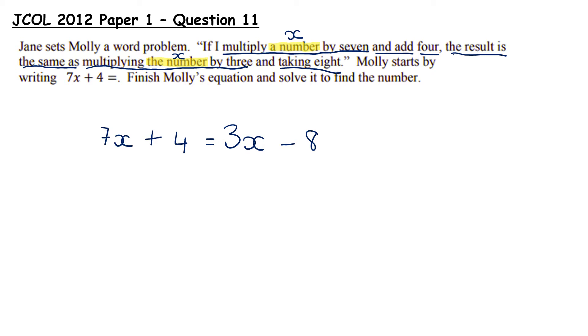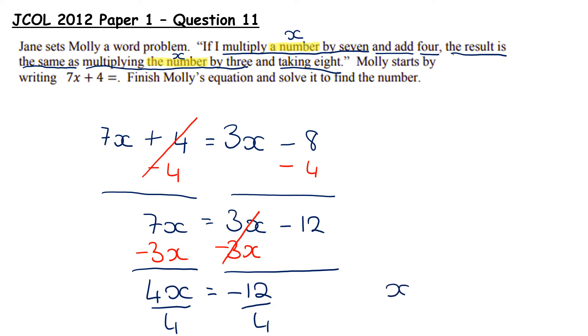Finish Molly's equation, we've done this, and then solve to find the number. I'm going to use some vertical balancing. I'm going to take away 4 from both sides. That leaves me here with 7x equals 3x minus 12. I'm then going to take away a 3x from both sides. Remember we want to get letters on the left, numbers on the right. That leaves me here with 4x equals minus 12. And then our final step is to divide both sides by 4 which gives me a final answer of x equals minus 3.